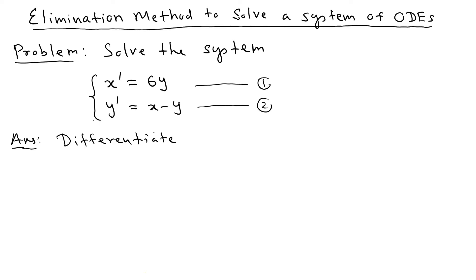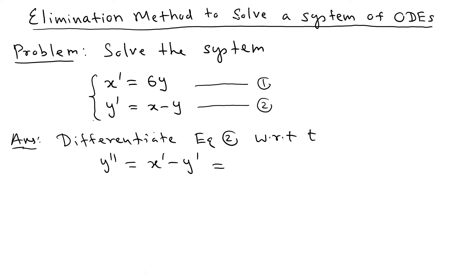Differentiating equation two with respect to t gives y double prime equals x prime minus y prime. Now, to write this using only one variable, we can remove x prime using equation one. Since x prime equals 6y, we substitute to get y double prime equals 6y minus y prime. Now the entire equation is in one variable.